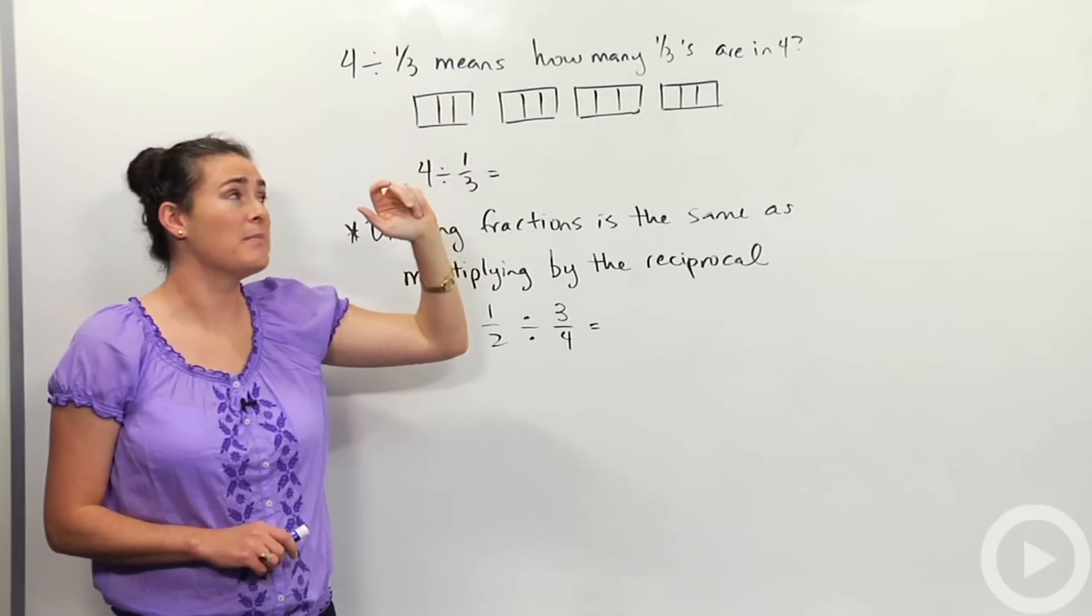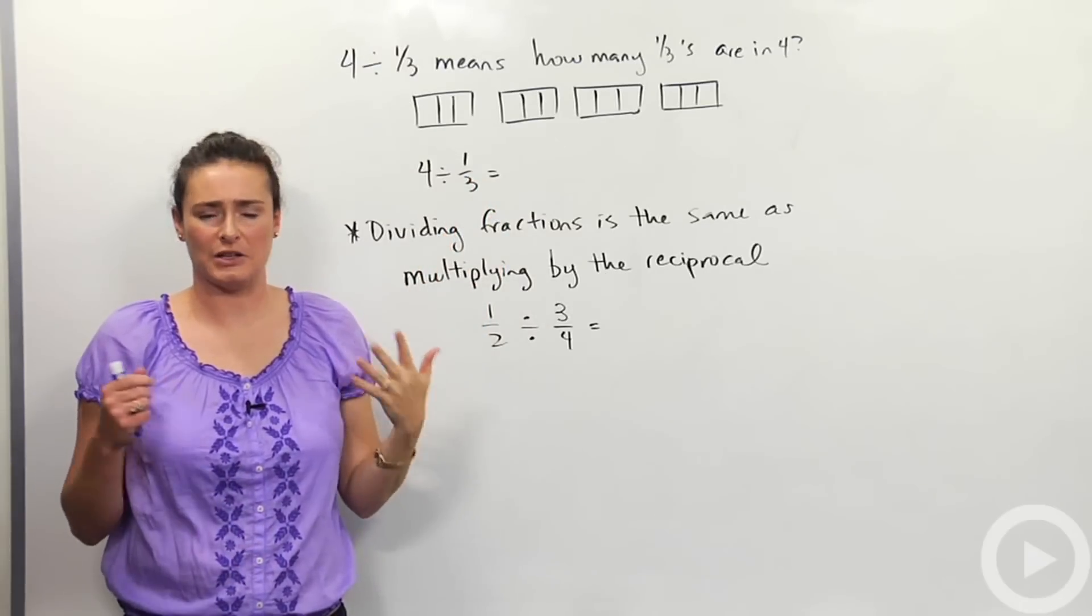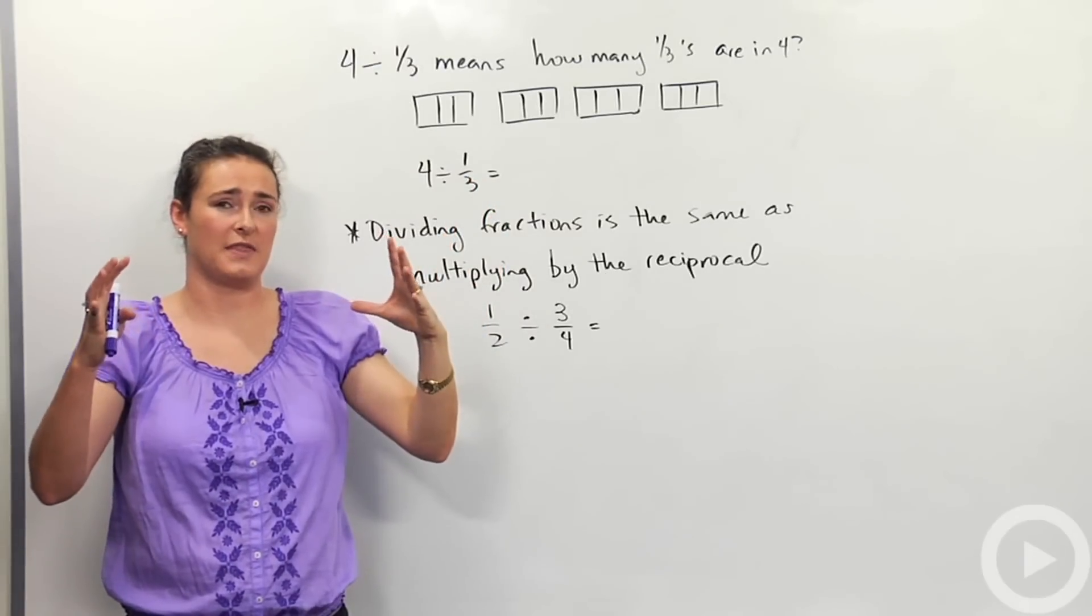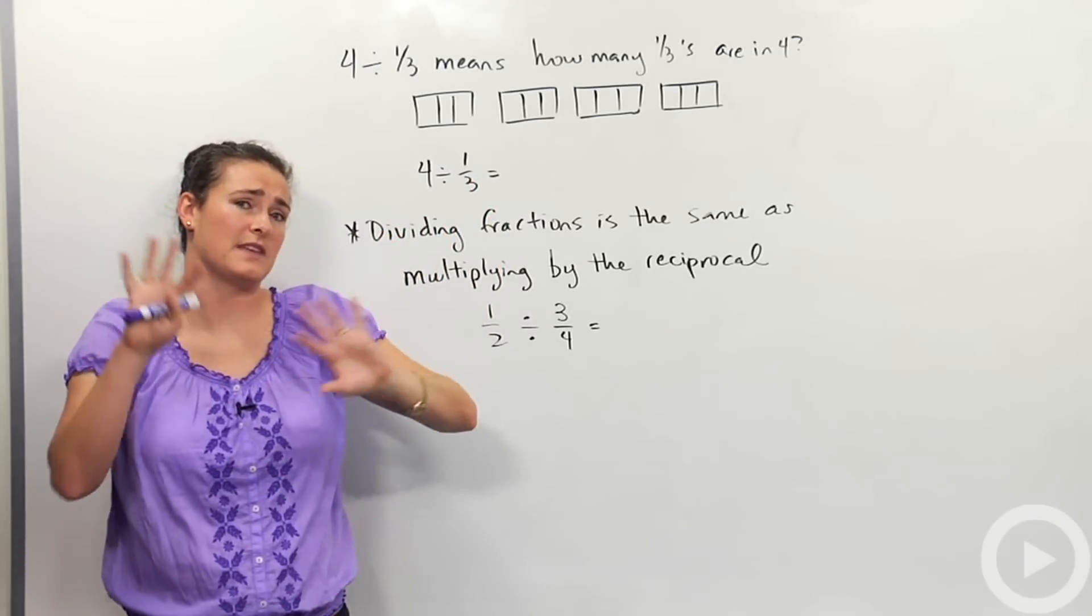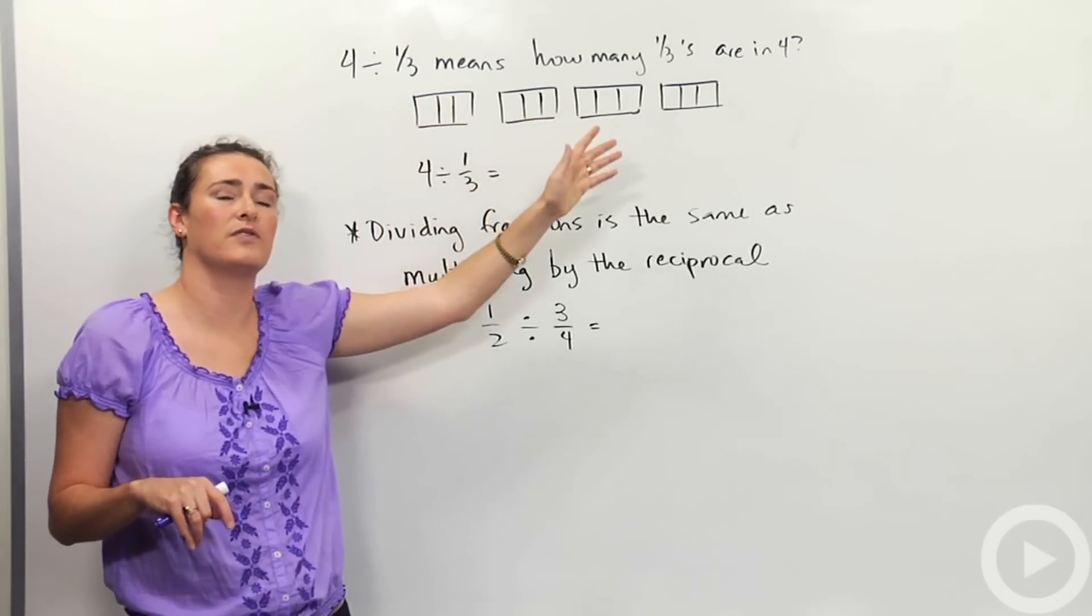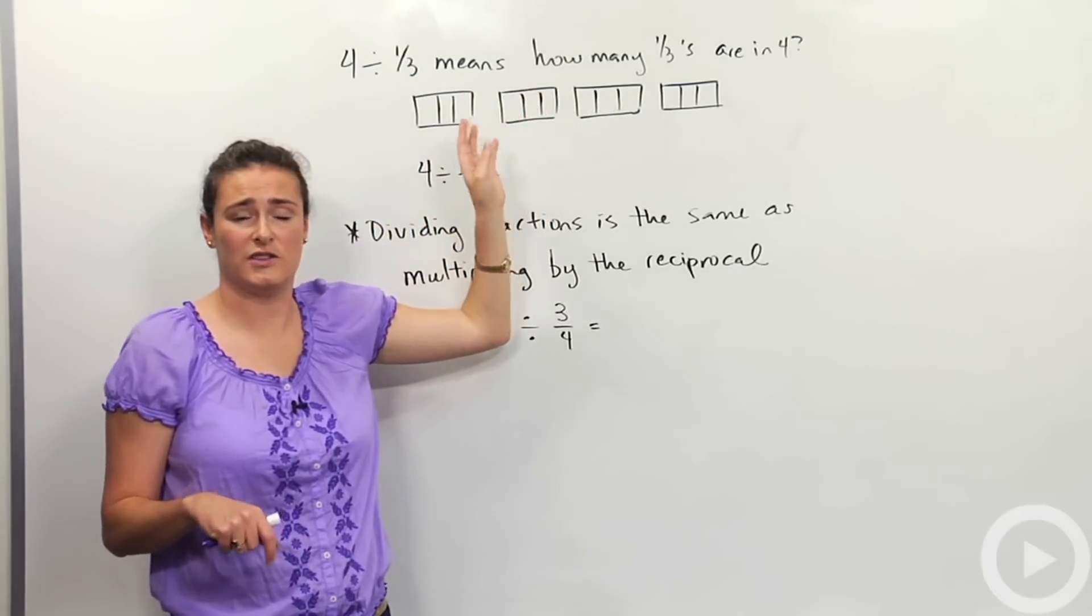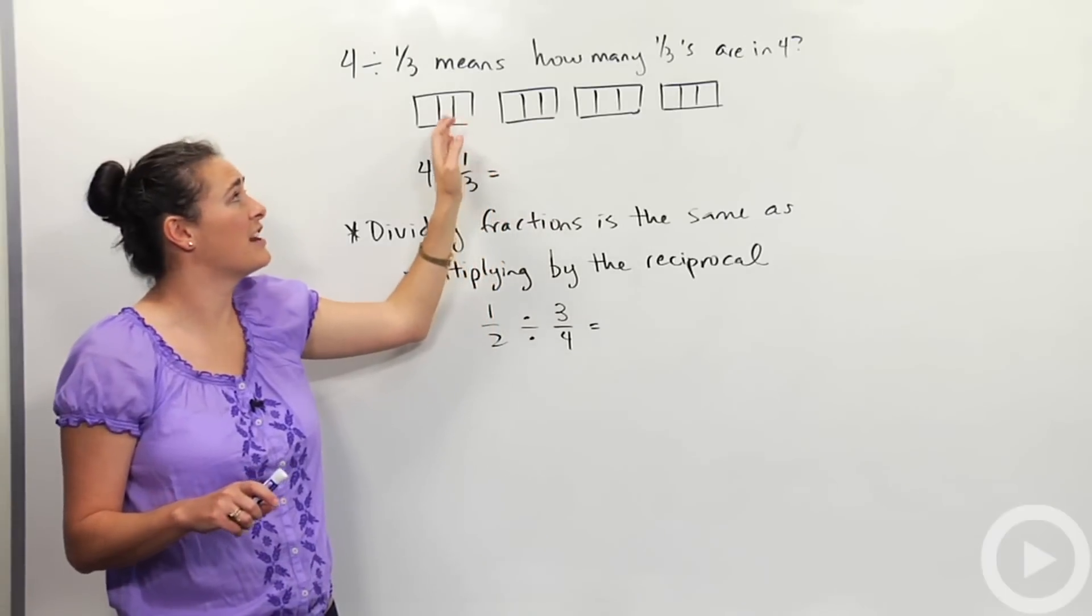Four divided by one-third means how many one-thirds are there in four? Remember how dividing represents splitting a big thing into smaller pieces or splitting something into parts? That's what's going on here. Four divided by one-third means how many one-thirds are there in four? Well, I drew a picture. I drew four bars. You can think of them as chocolate bars or something. And then I split them into thirds.